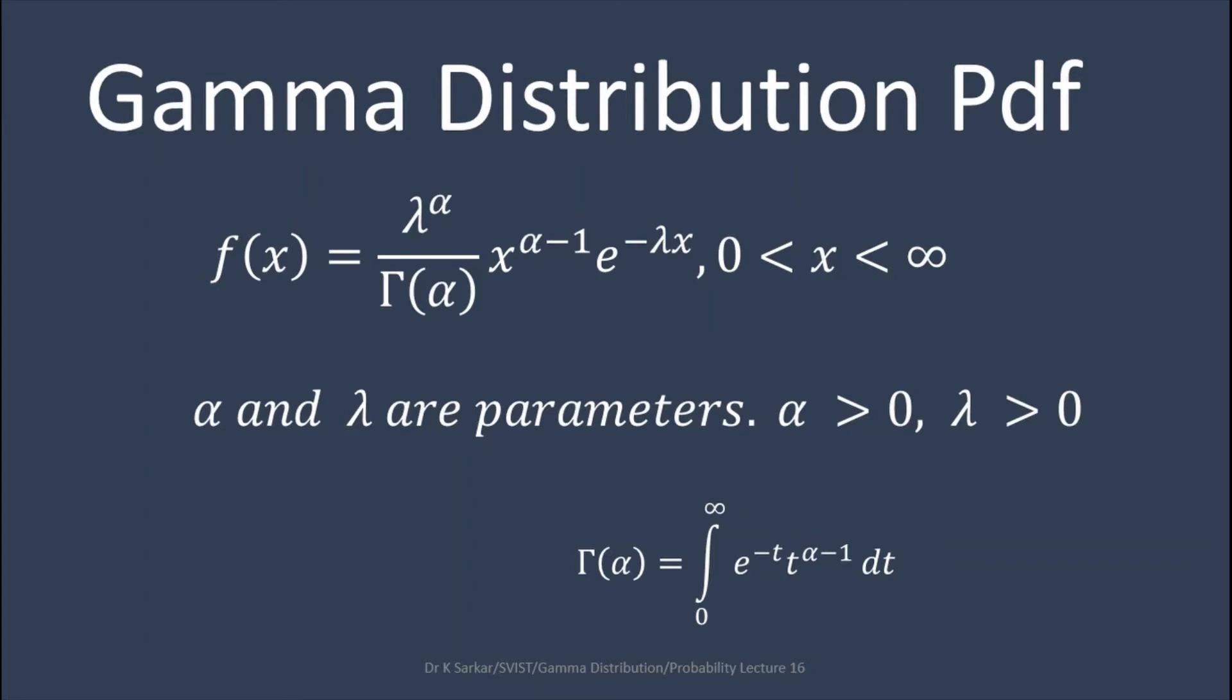Gamma alpha equals the integration from zero to infinity of e to the power minus t, t to the power alpha minus 1 dt, which is the gamma function.